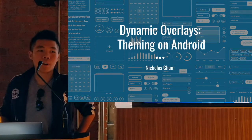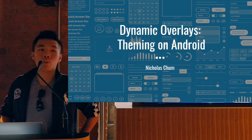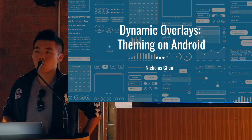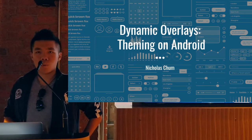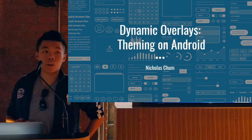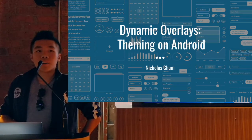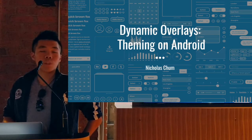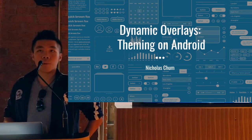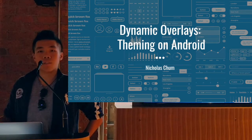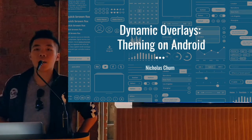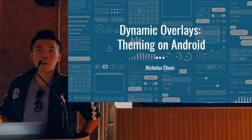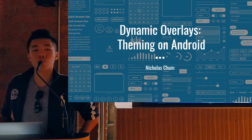I'm going to be talking about dynamic overlays — it's a sort of new concept with Android O, the new operating system coming out in a week or two. It's directly correlated to theming in Android, because theming on devices such as Samsung, HTC, or LG actually uses overlays. Many people don't realize that, but that's how they get their new resources, their colors, and new styles.